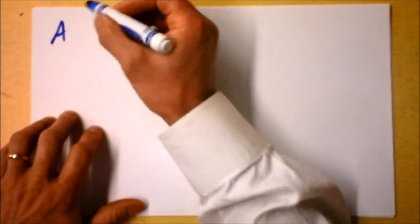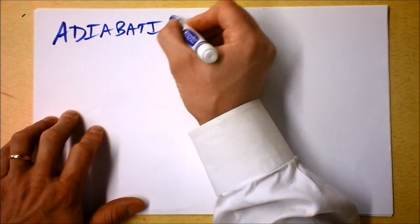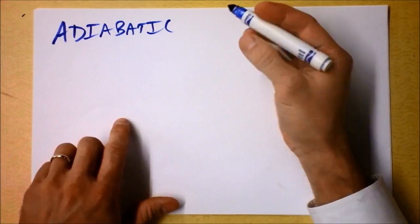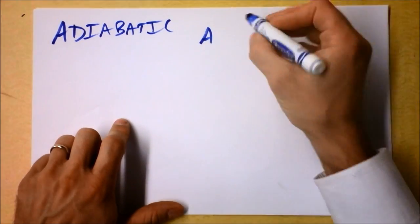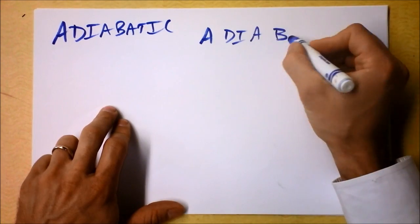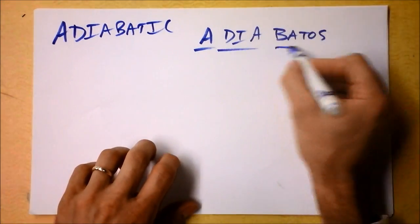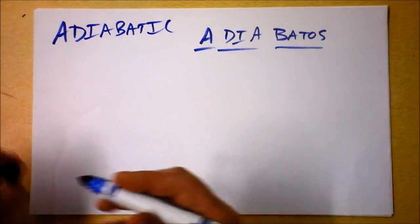The English word adiabatic is a funny one. It comes to us almost directly from the Greek: 'a' meaning not, 'dia' meaning through, and 'batos' meaning passable. So it's about not being able to get through something.